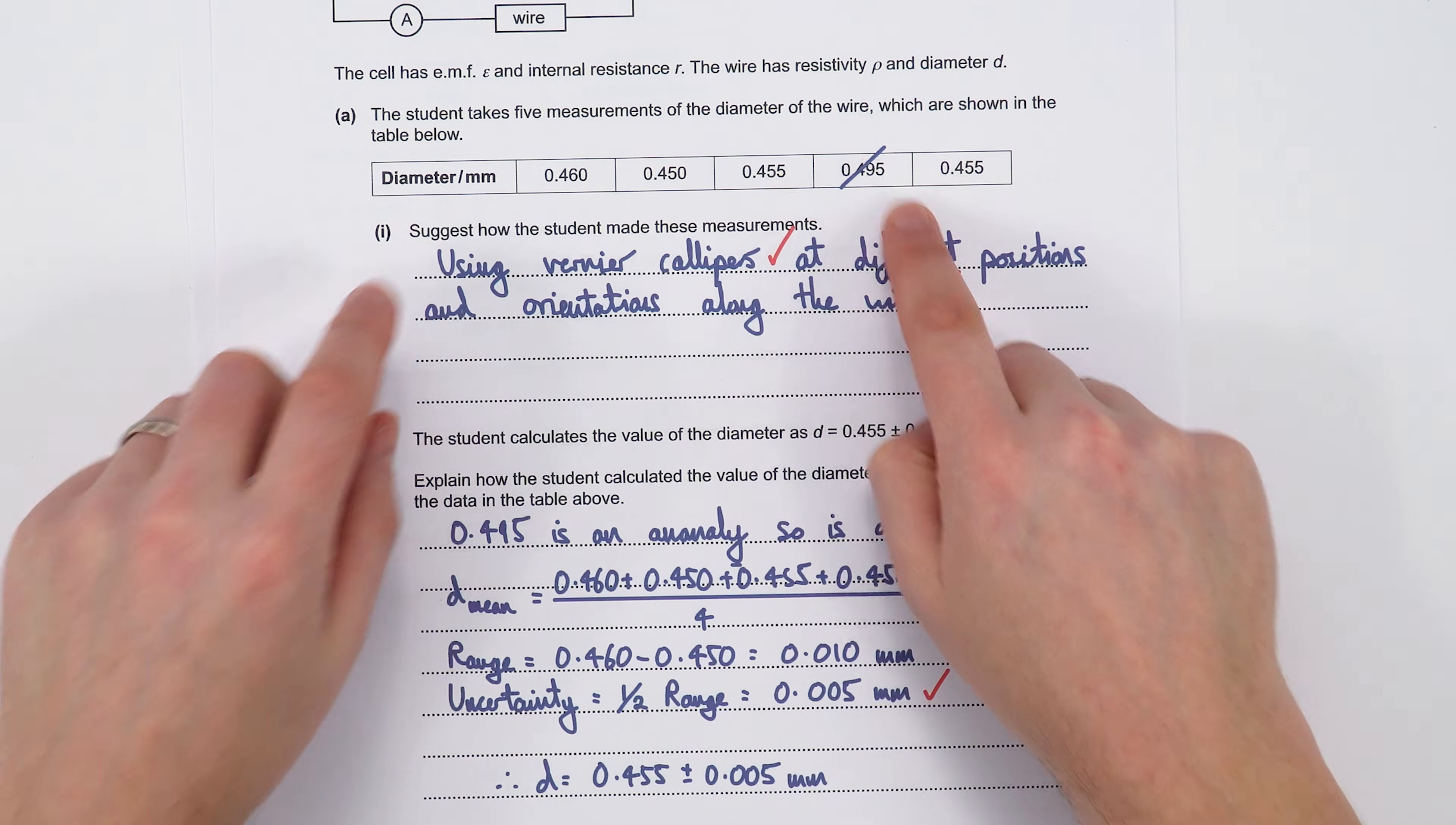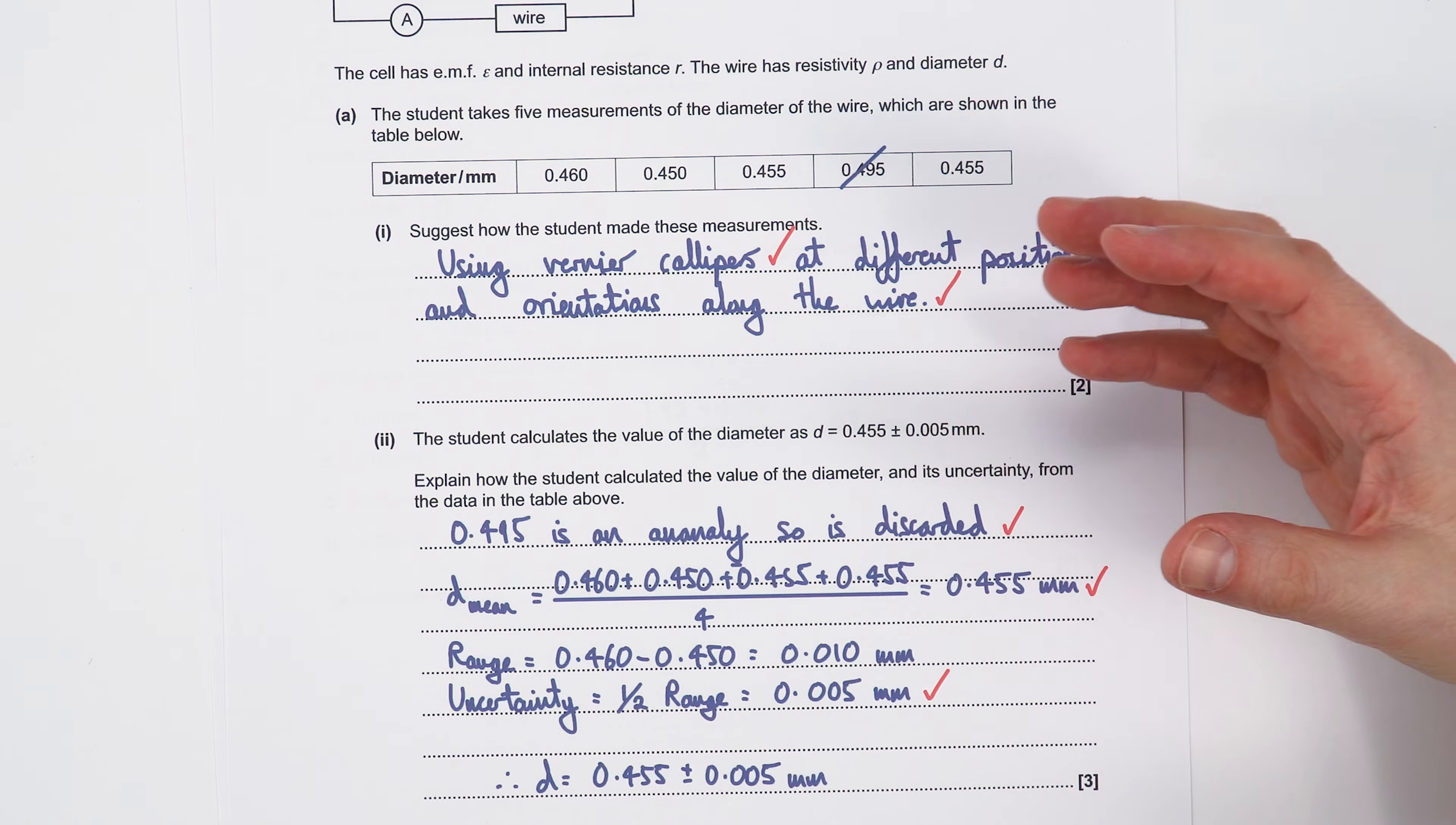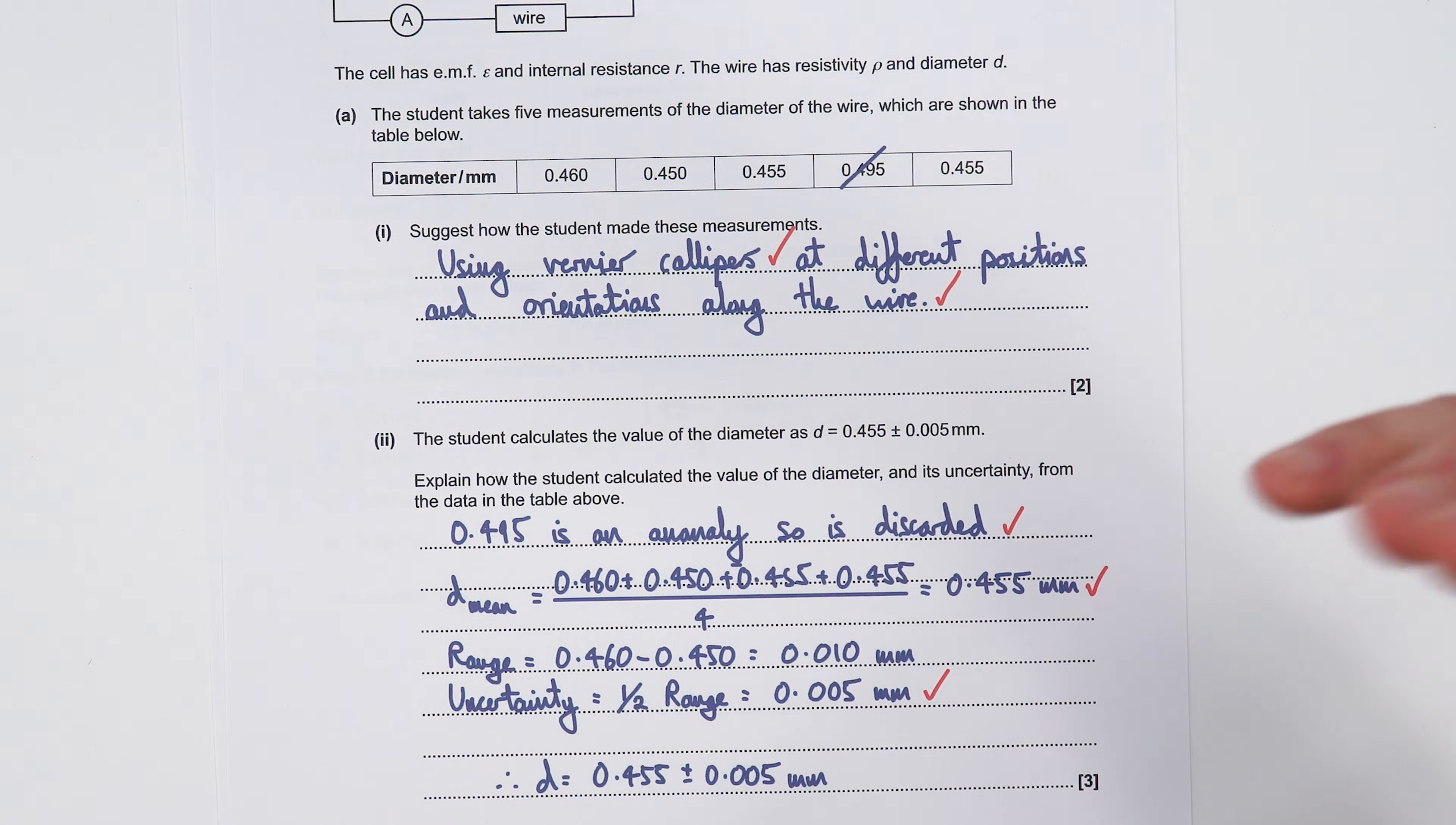So that question was about measuring the diameter of a wire. Now the very next year the same exam board asked this question over here and they had a question about the diameter of a wire and they had five bits of data. So again this question is about how you actually measure that. This comes up quite a lot.